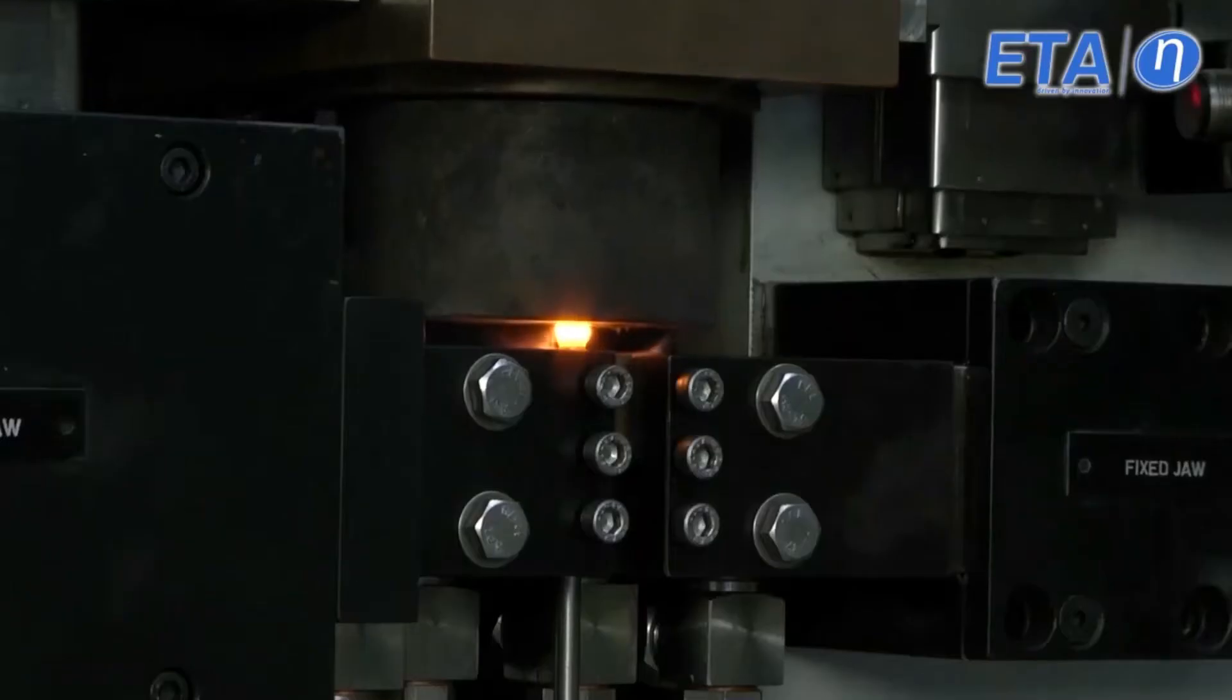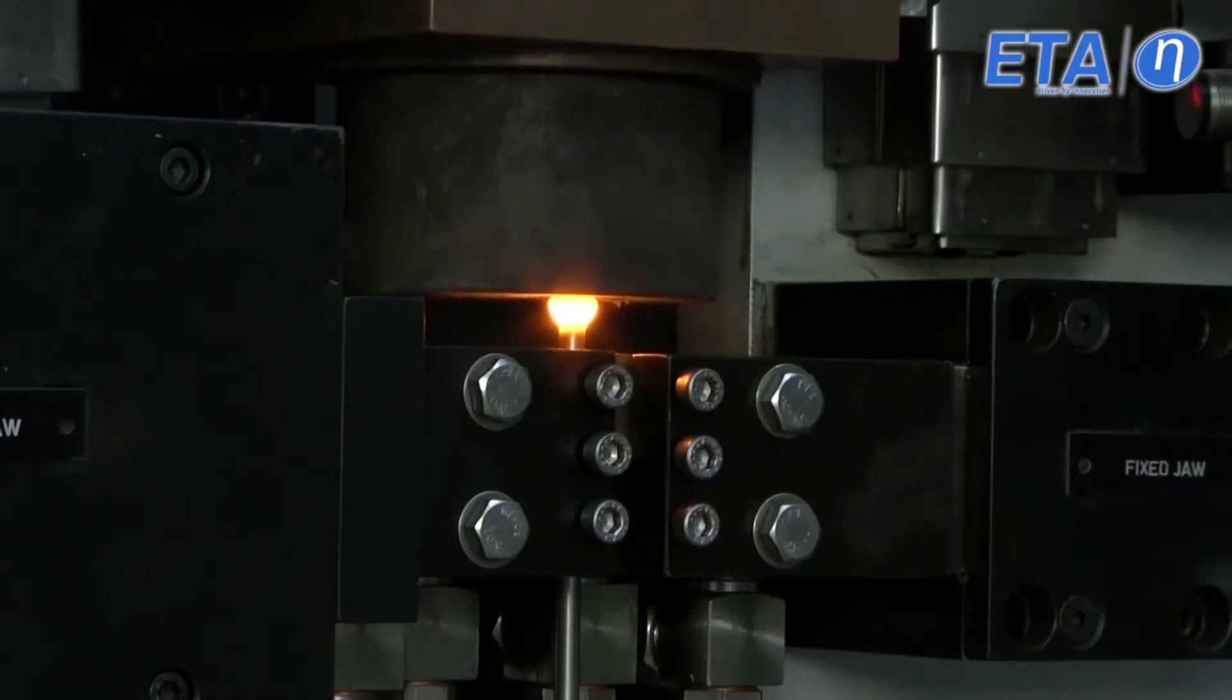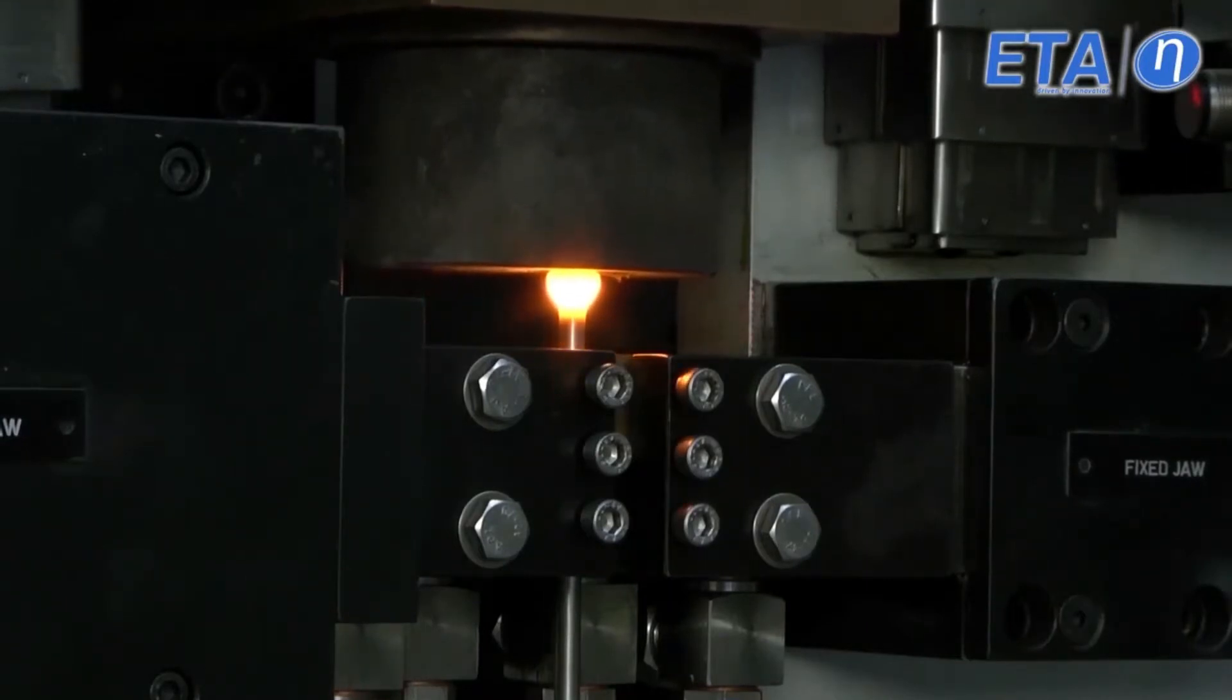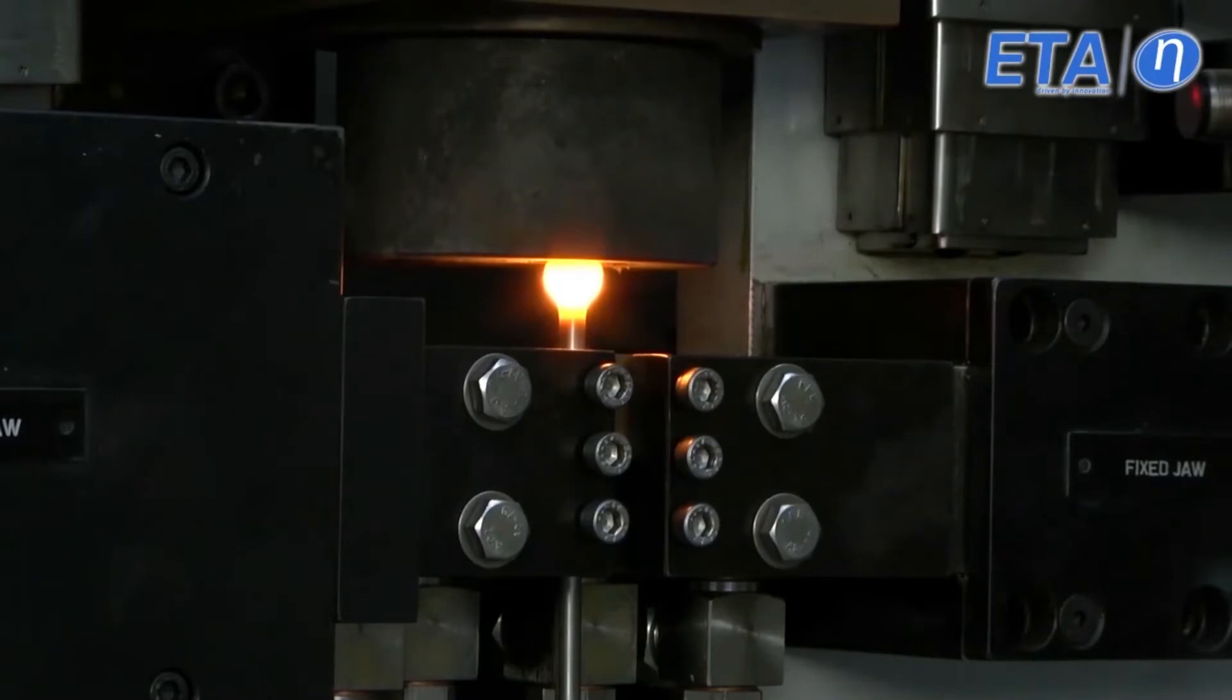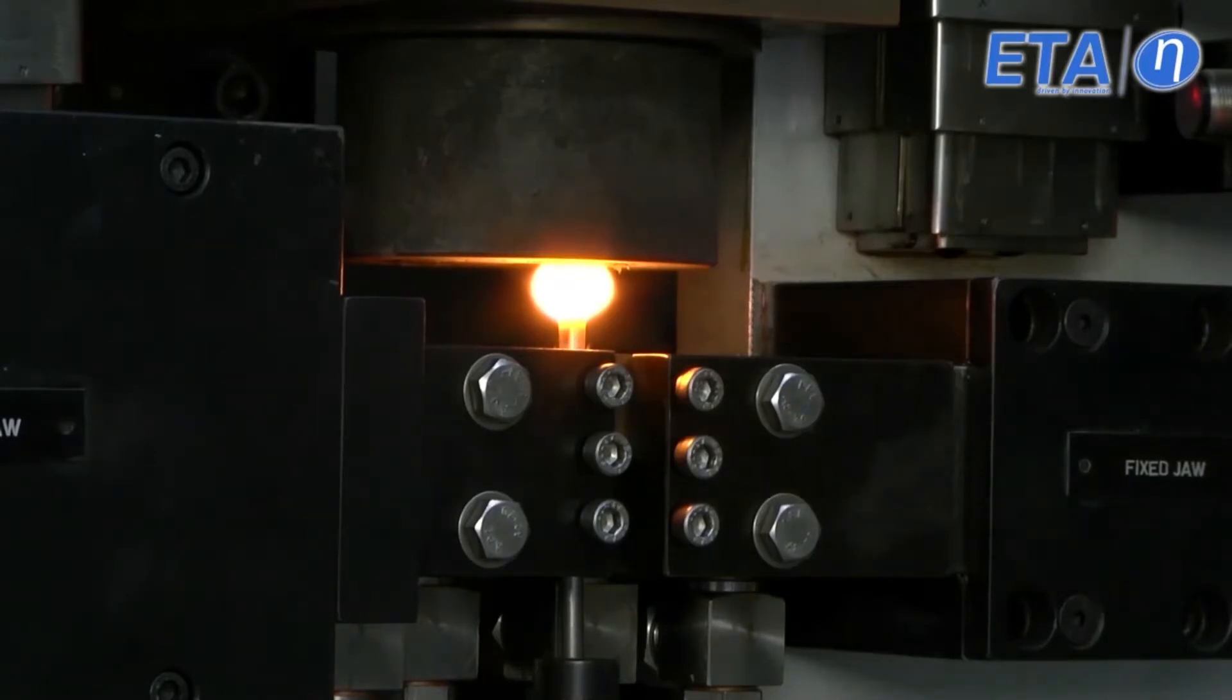When the job touches the anvil, it connects the clamping electrode and anvil electrode and short circuits the secondary of the transformer. A heavy current at low voltage passes through the job, making the portion of the job in between the electrodes hot and reaching the plastic stage.